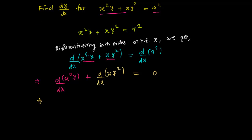Here we're going to have a little problem. For x squared y, the x is fine, but y is different — it's not x. So there are two functions: x squared and y, which are completely different. We need to use the product rule because one function is multiplying another.